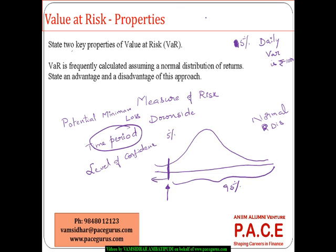The minimum loss is going to be one thousand on a daily basis, and we can say that with five percent confidence — which is another way of saying there is a five percent chance that on a daily basis the loss is going to be one thousand or more. So VaR is a measure which primarily assesses the potential minimum loss over a given time period with a certain decided level of confidence.